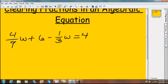We have our common denominator between our two fractions is 9. So what we're going to do is multiply the entire equation by 9. We're going to do the 4 over 9 by 9, multiply 6 by 9, 1 third by 9, and 4 by 9.